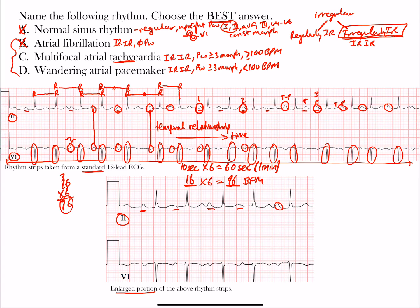That gives us 16 QRS complexes. 16 times 6 equals 96 beats per minute — close to that upper threshold. However, there's a P wave at the very end of the strip without a following QRS complex, making the atrial count 17. 17 times 6 equals 102 beats per minute, putting the atrial rate at or above 100. This places the rhythm in the MAT category, so the best answer is C — multifocal atrial tachycardia.